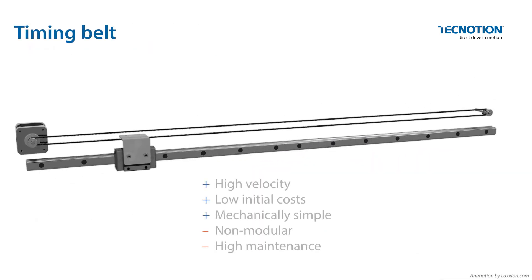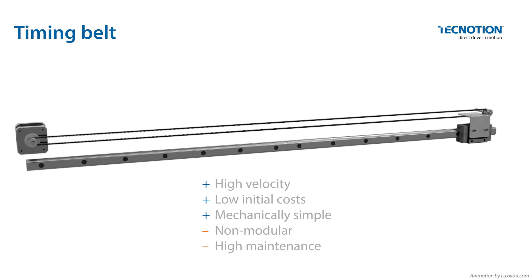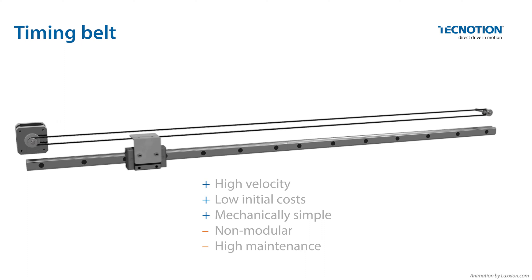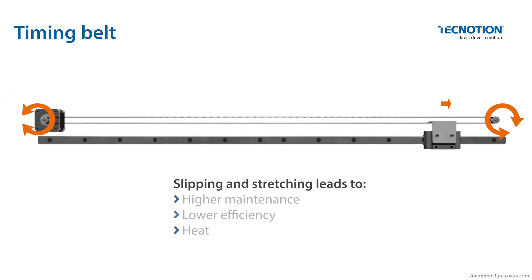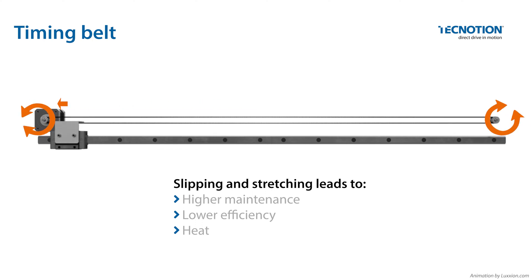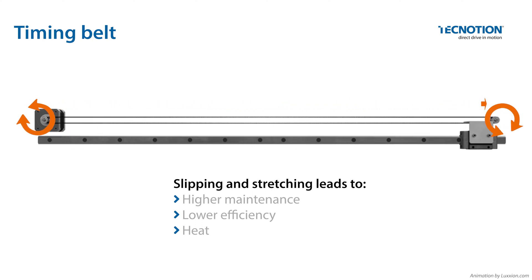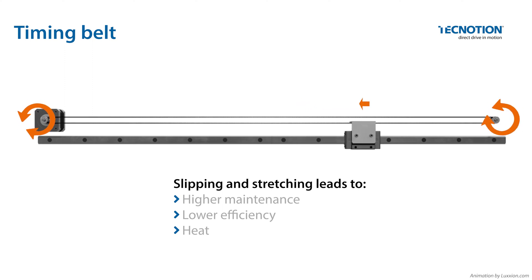Although belt drive applications can reach a high velocity and are not expensive, they have limited accuracy and acceleration. Slipping and stretching of the belt causes a less precise system which requires more maintenance. The operating efficiency of the belt is affected by the heat originated from the mechanical contact and slip.